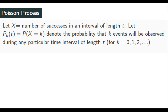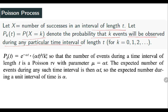Next we discuss the Poisson process. In binomial and Poisson distribution we talk about number of successes, but in a Poisson process we talk about the number of successes in an interval of length t. Whenever an interval is mentioned, you are talking about a Poisson process. P(X = k) is the probability that k events are observed during a time interval of length t. The distribution is the same Poisson form, but mu = alpha × t, where alpha is the expected number of events per unit interval of time.